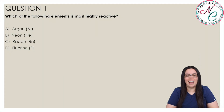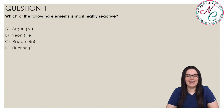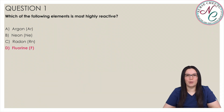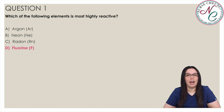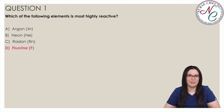Which of the following elements is highly reactive? Is it A Argon, B Neon, C Radon, or D Fluorine? And the correct answer is D Fluorine. Fluorine is in the halogen group, which elements are highly reactive. Argon, Neon, and Radon are members of the noble gas group, whose elements are extremely stable.